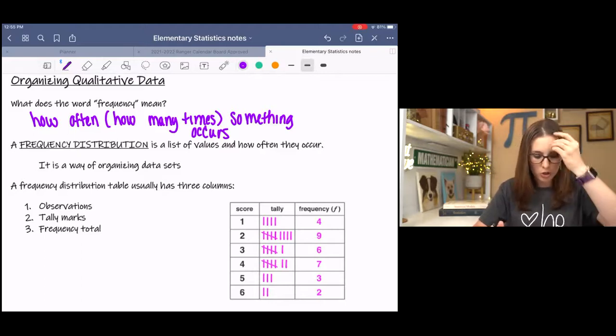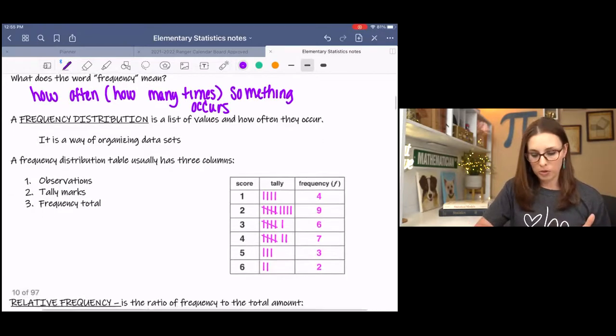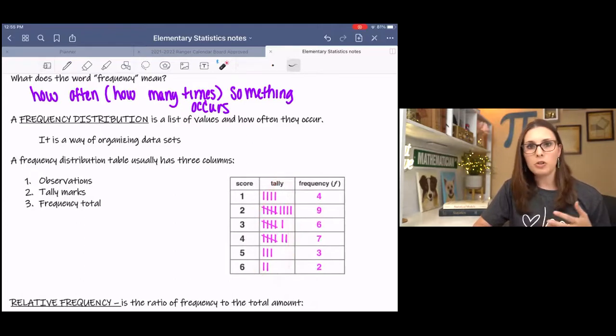It's just a way of organizing data sets so that then you can create charts based on these tables. A frequency distribution usually has three columns, sometimes two. The observations, tally marks, and then frequency total. Sometimes you won't see the tally marks, but these tally marks are just a way for you to keep up with how many.